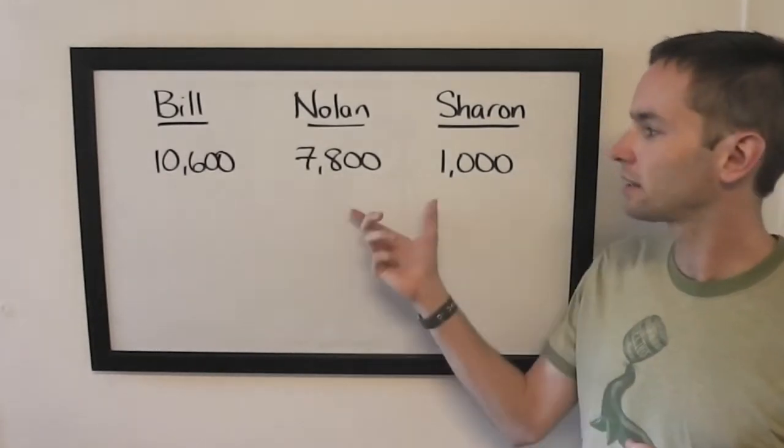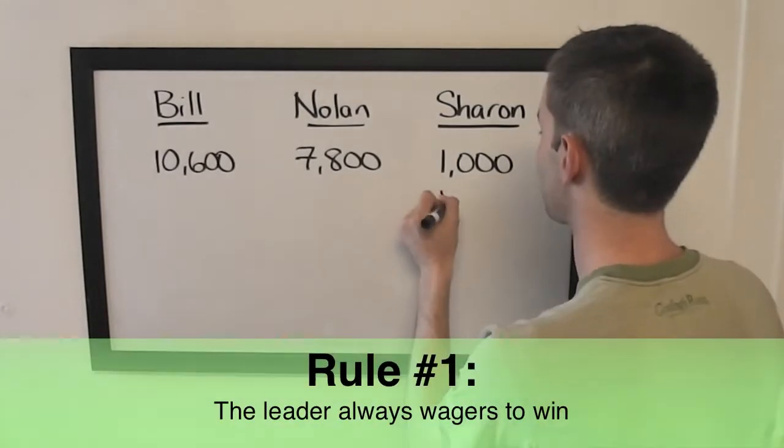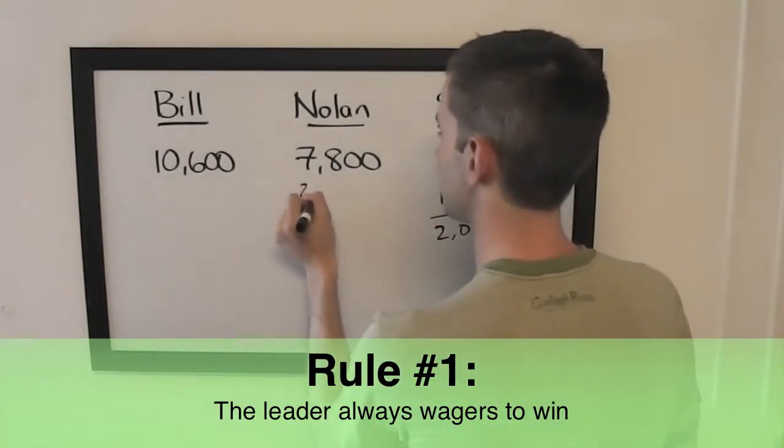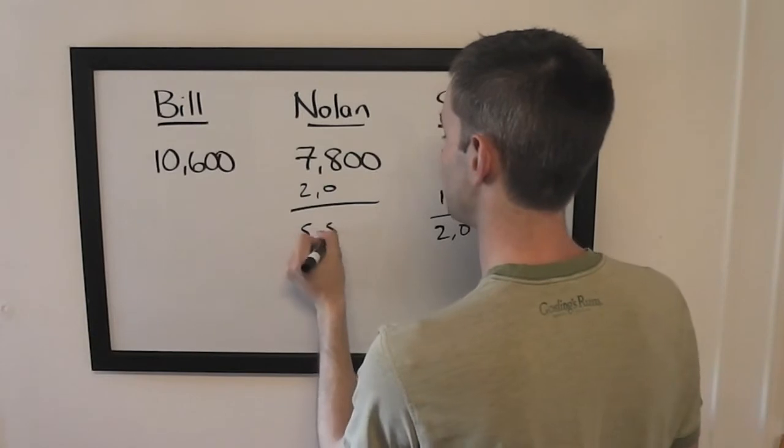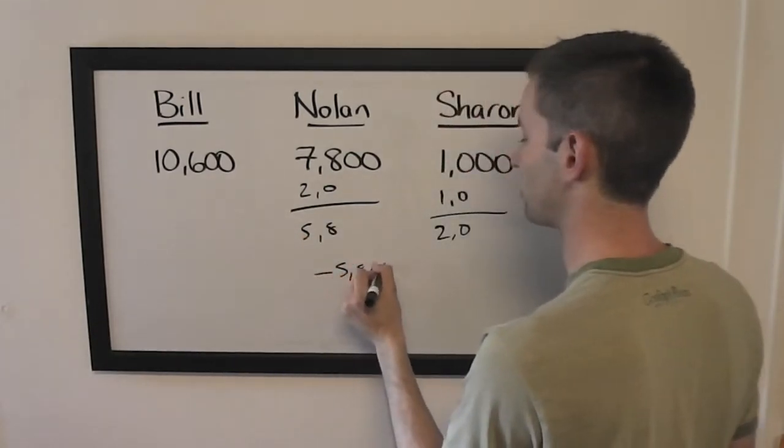We'll skip ahead to looking at second and third. If Sharon doubles up, she's going to have 2,000. So to stay above her no matter what, Nolan can wager up to 5,800.